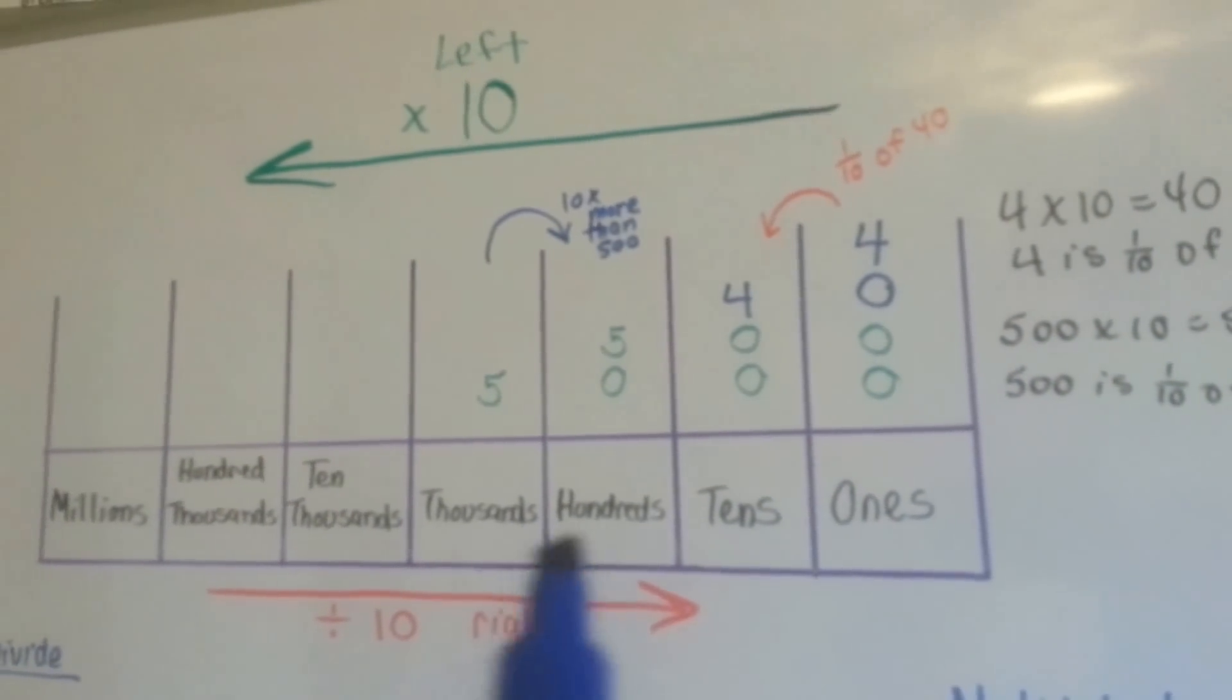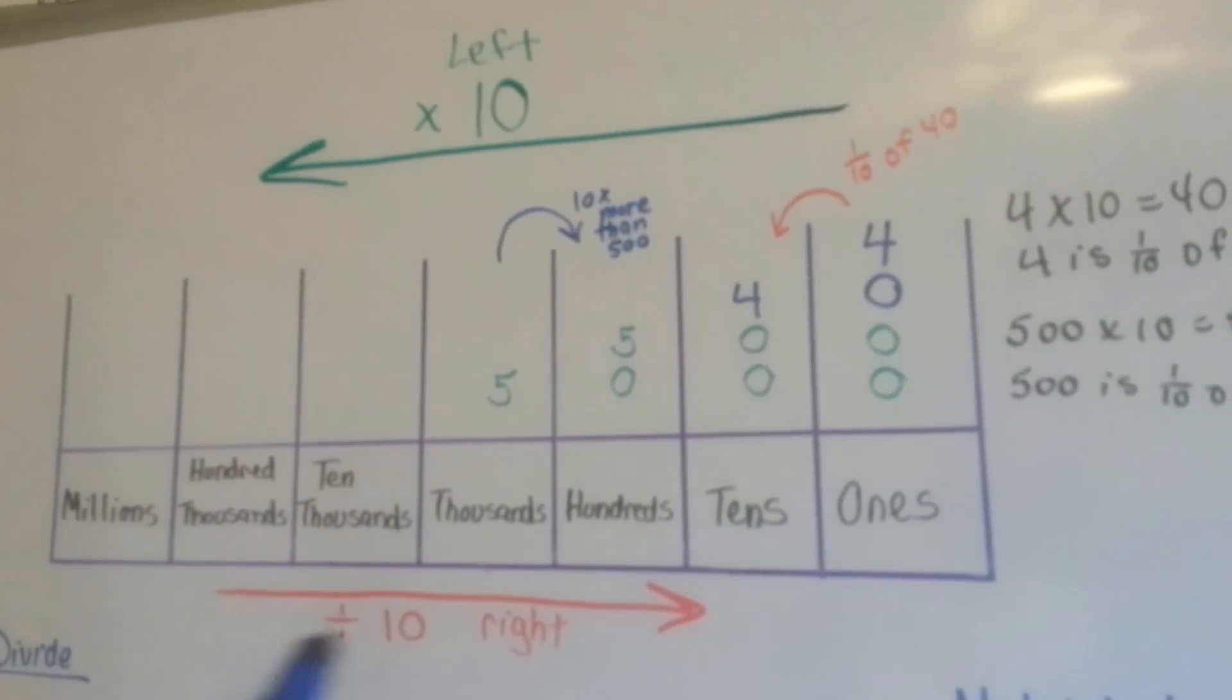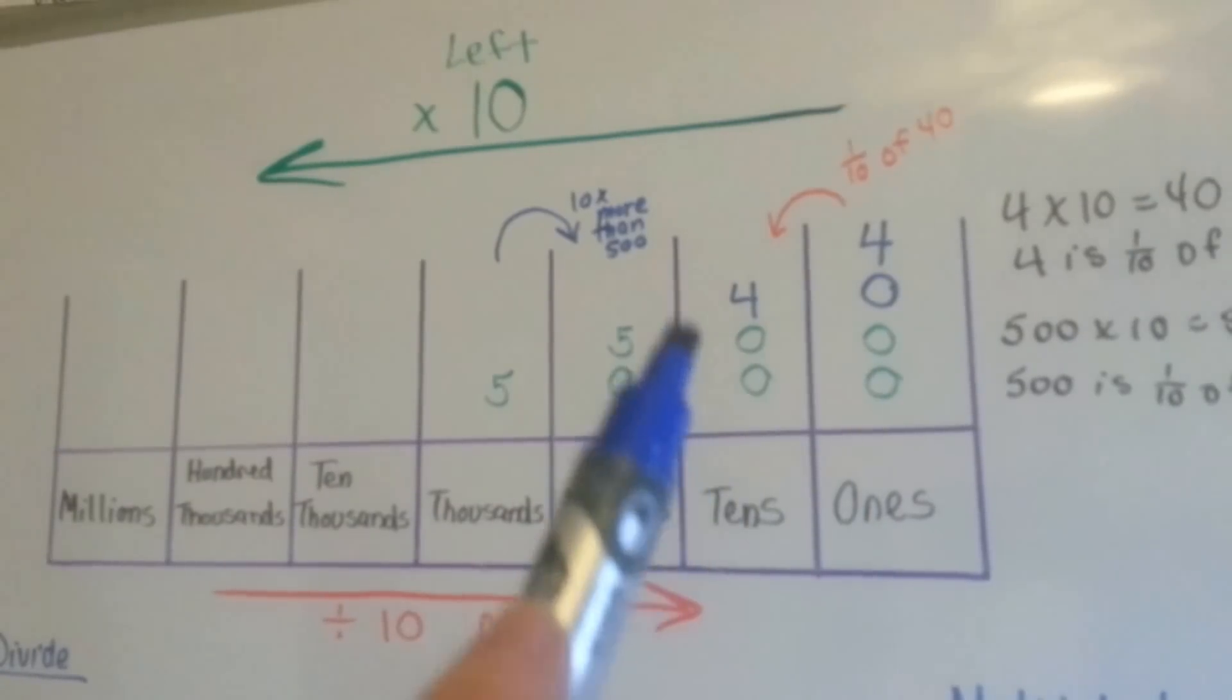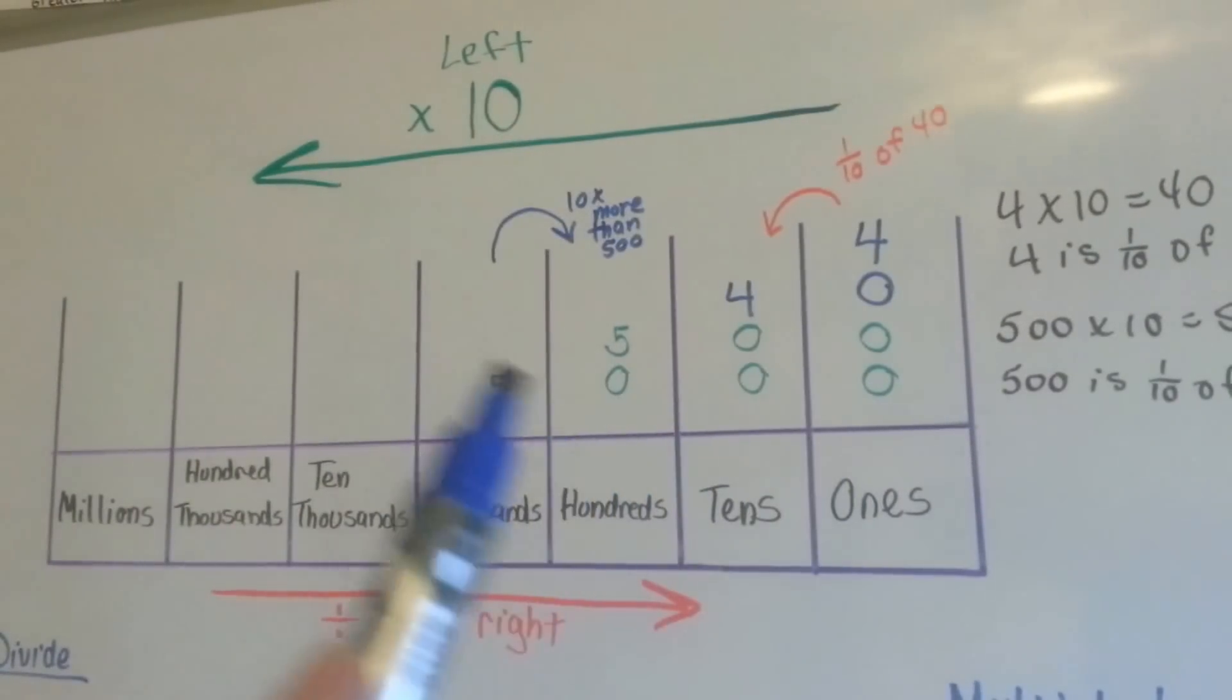And if you remember, there's the ones, tens, hundreds, thousands, etc. And as we move to the next place value, we're multiplying by 10.